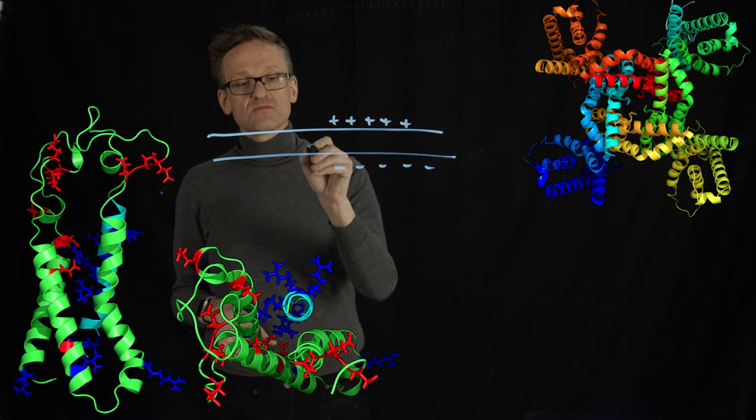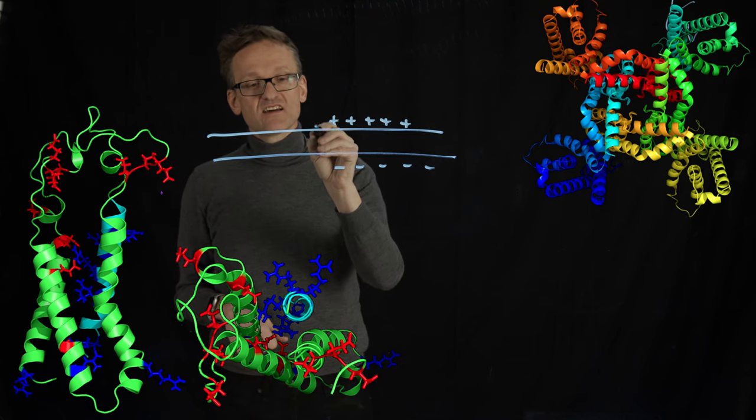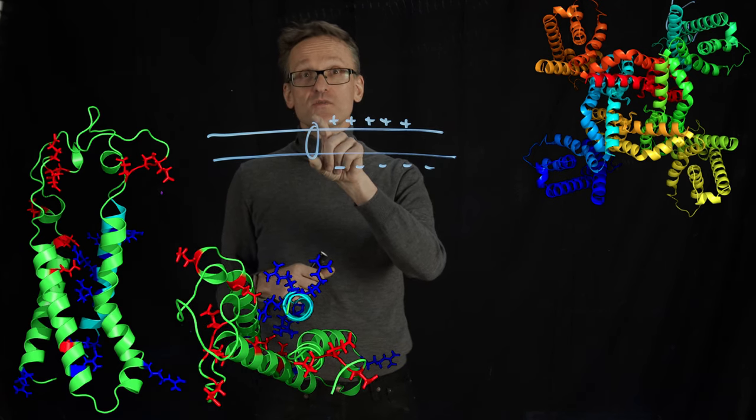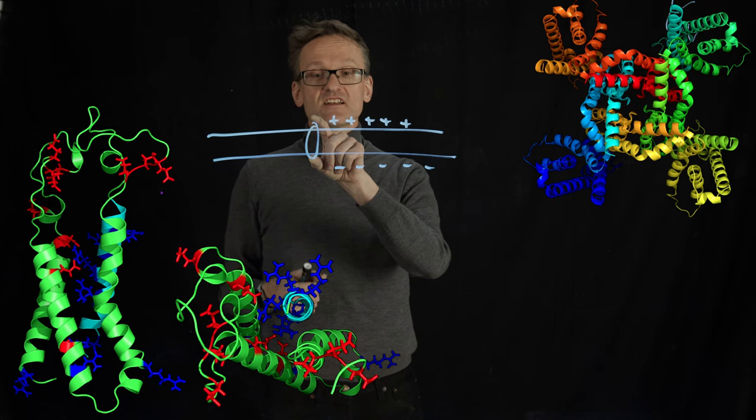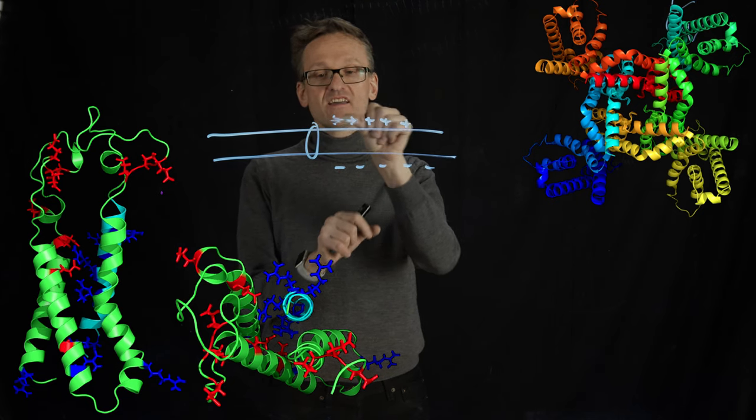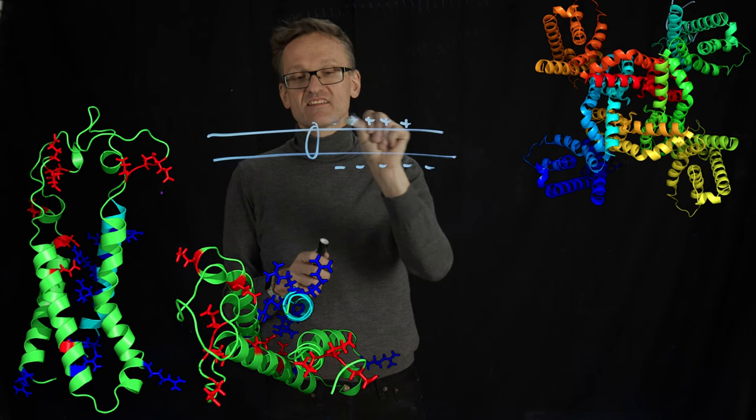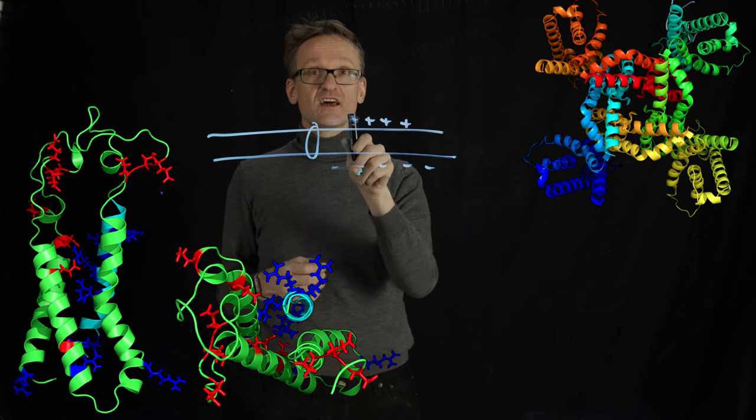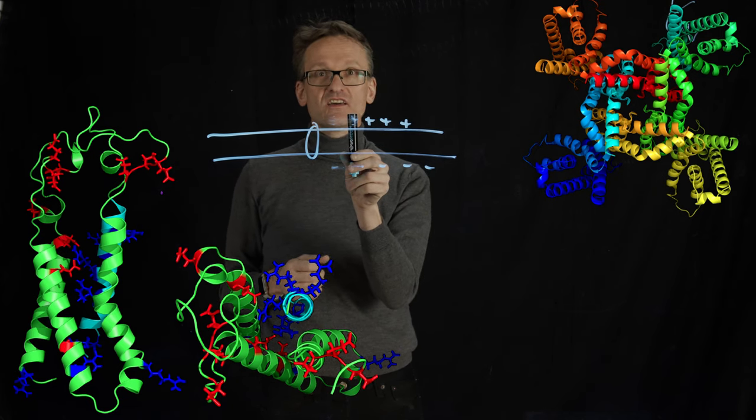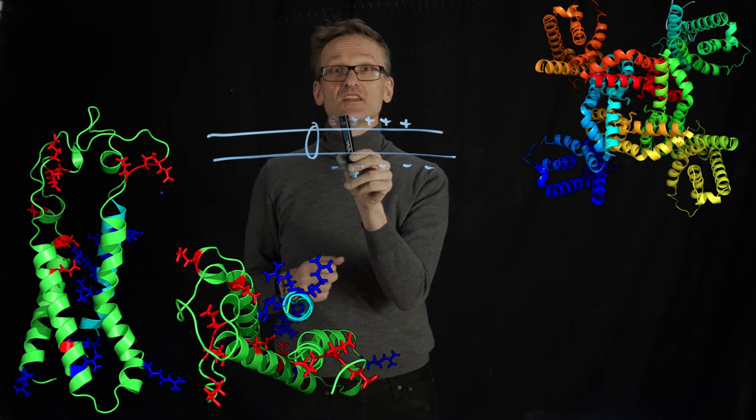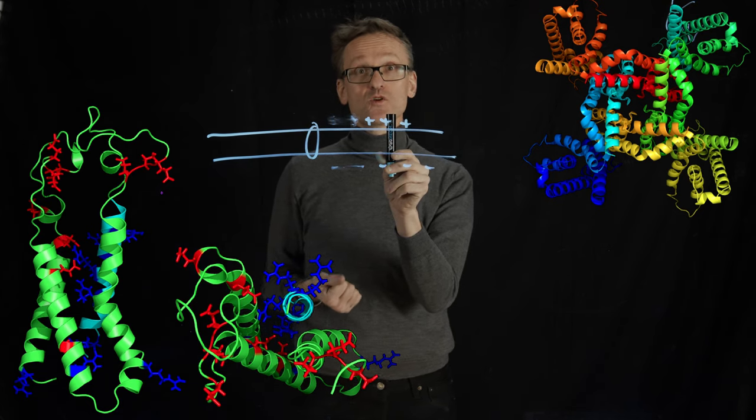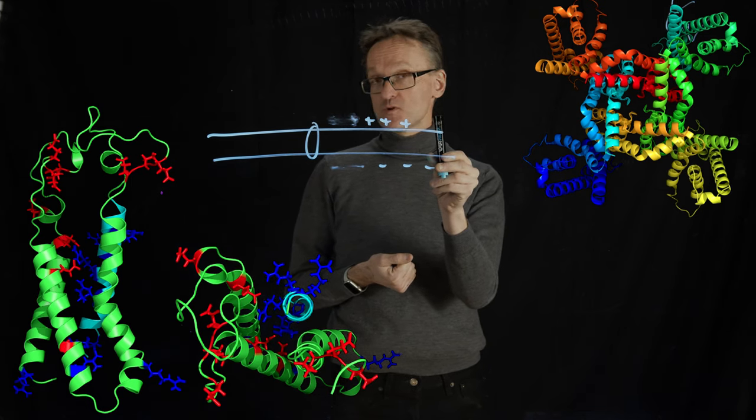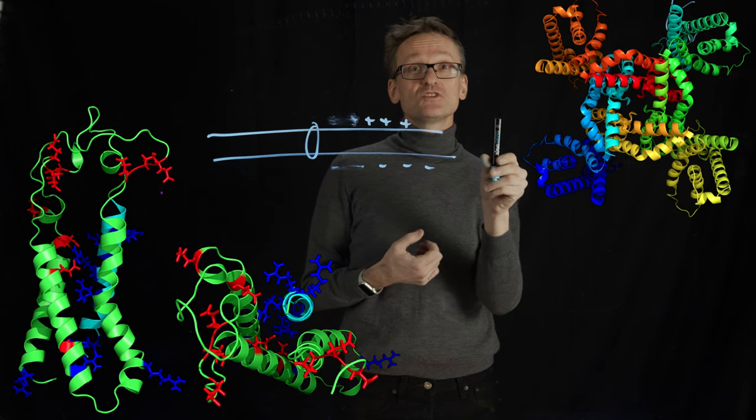So that suddenly there is zero potential here. That is going to cause additional channels to react. And then I get a change. So there has been some positive ions flowing in. Now I have a net neutral charge here. Then more channels will open. Then the potential will have changed. Then more channels will open. The potential will have changed. More channels will open. The potential will have changed. Do you see what's happening?